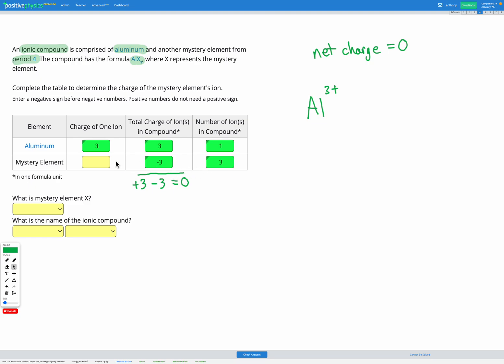Okay, so for the mystery element we figured out the overall charge of all of those is negative three and we know we have three of them. So we figured out that three times something is equal to negative three. So that means that our something must be a negative one charge because three times negative one gives us negative three. So we know that the charge of our mystery element ion must be negative one.